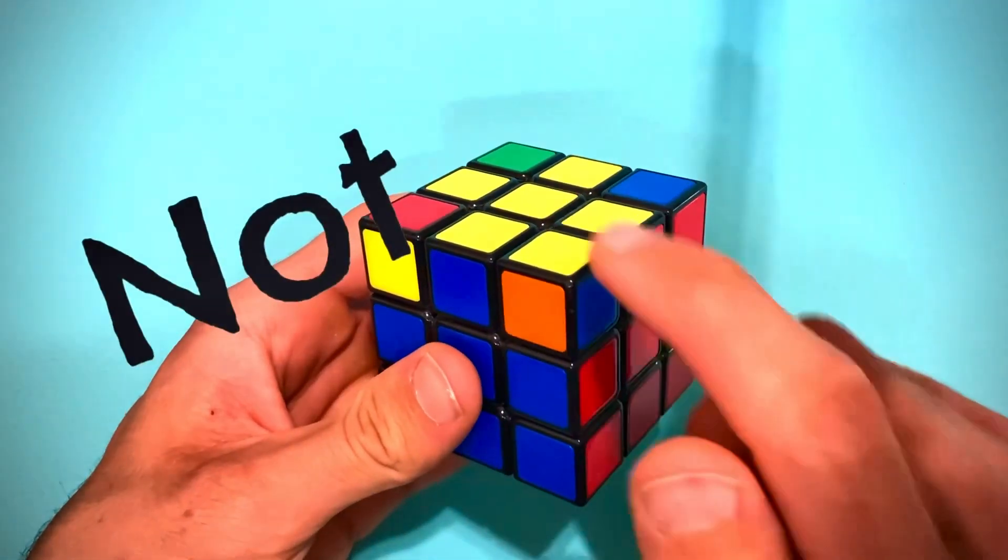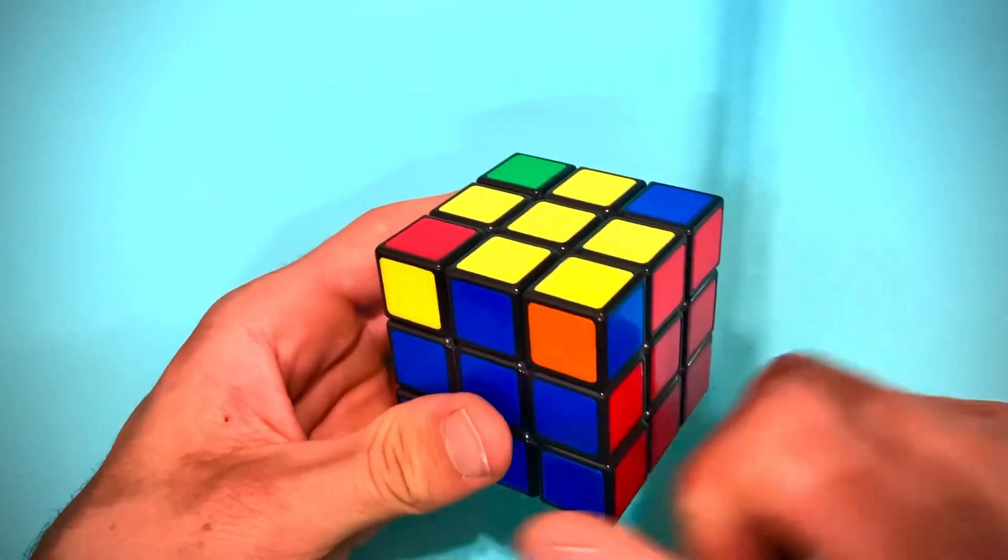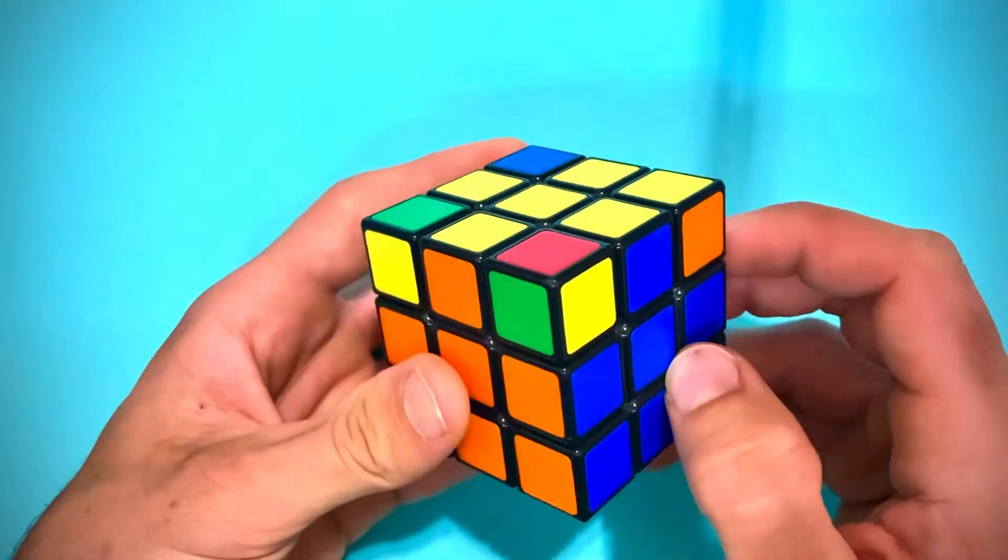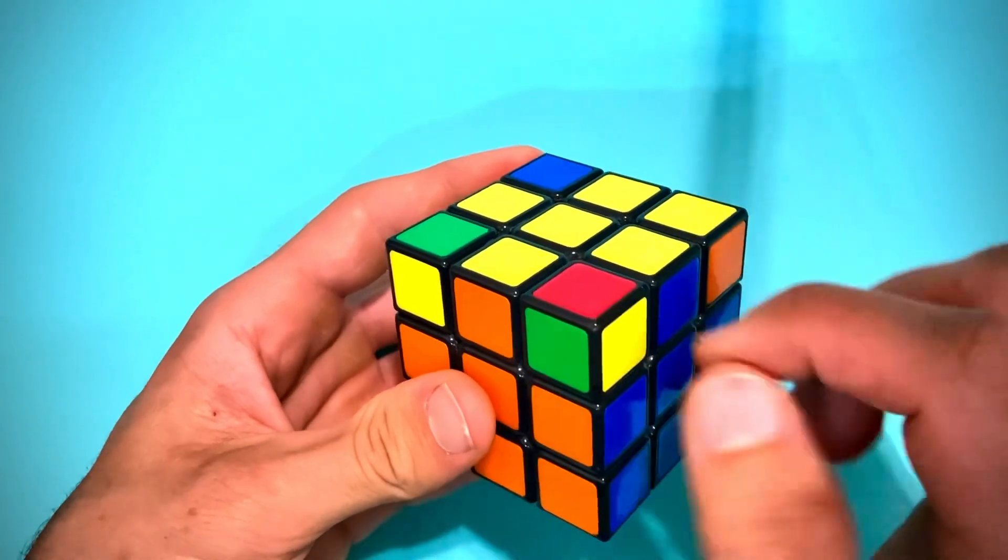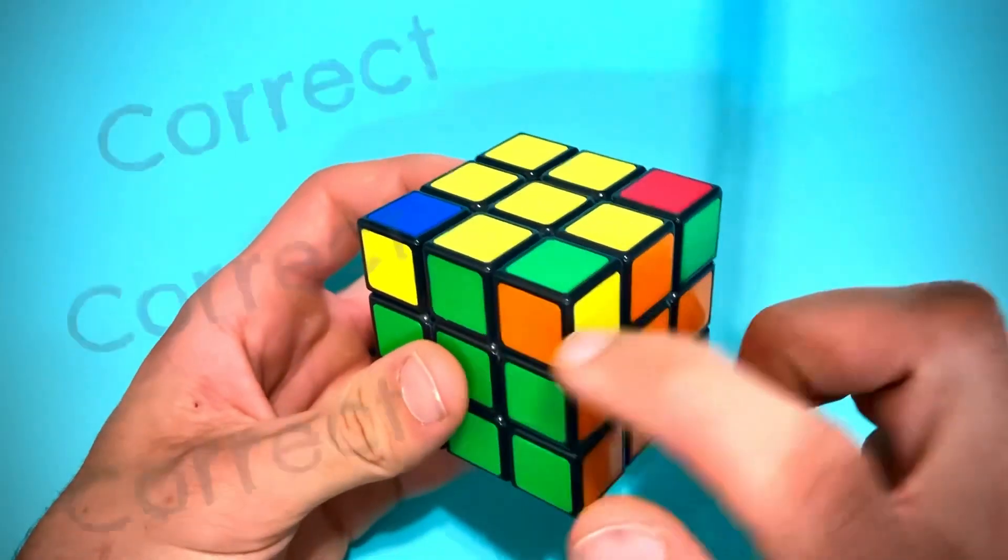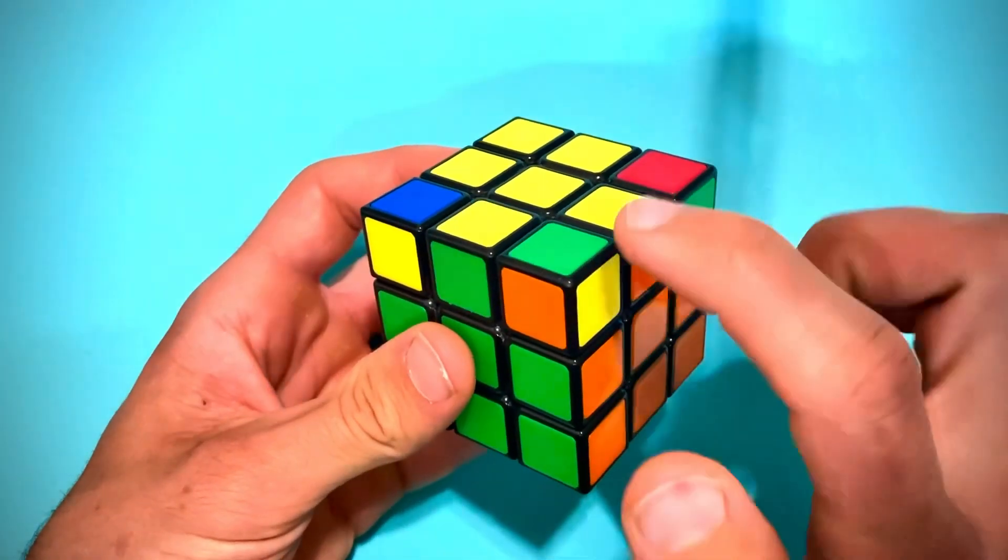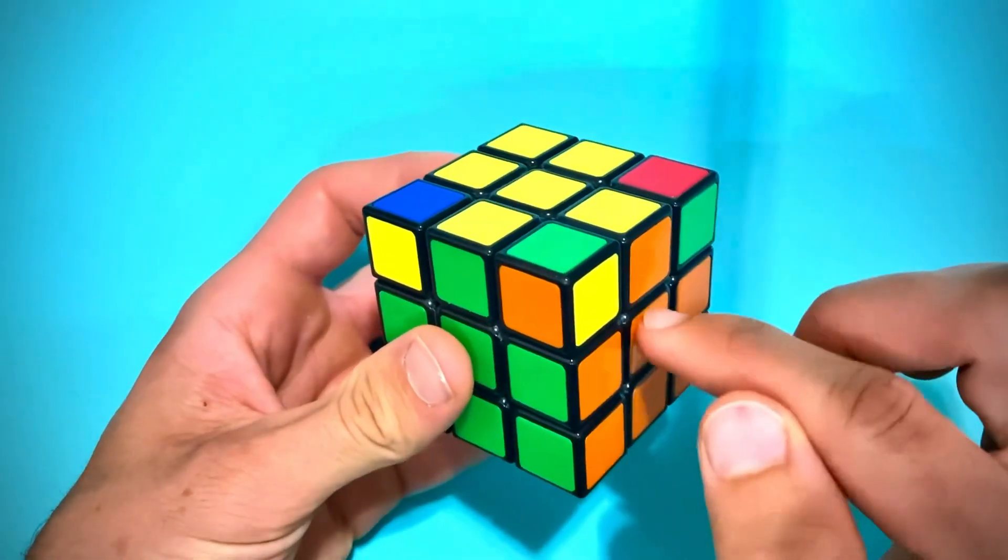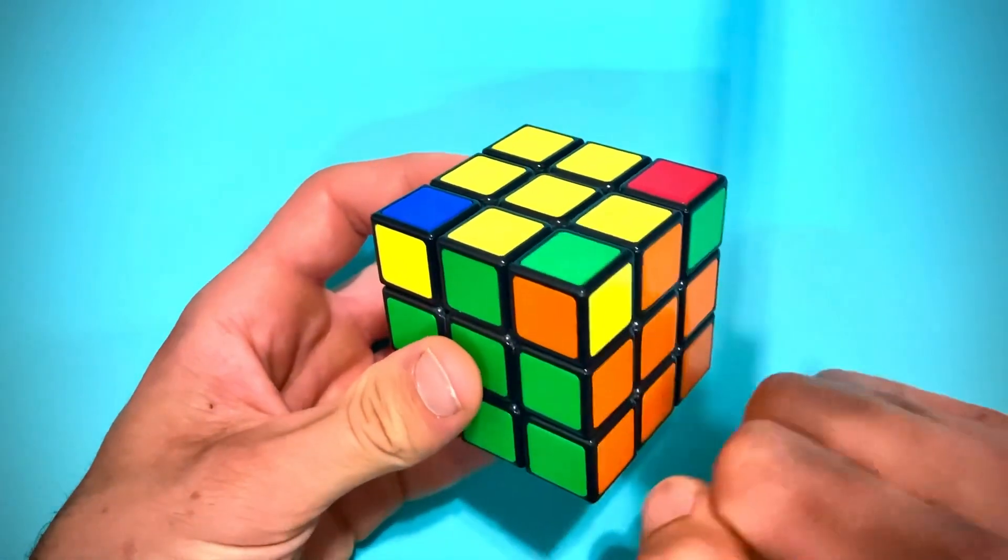So this is not one because the colors are not the same as the colors surrounding it. So move on to the next one. Same here, these colors do not match the colors surrounding it. But this corner is in its correct location based on yellow here, orange, and green - the same colors.